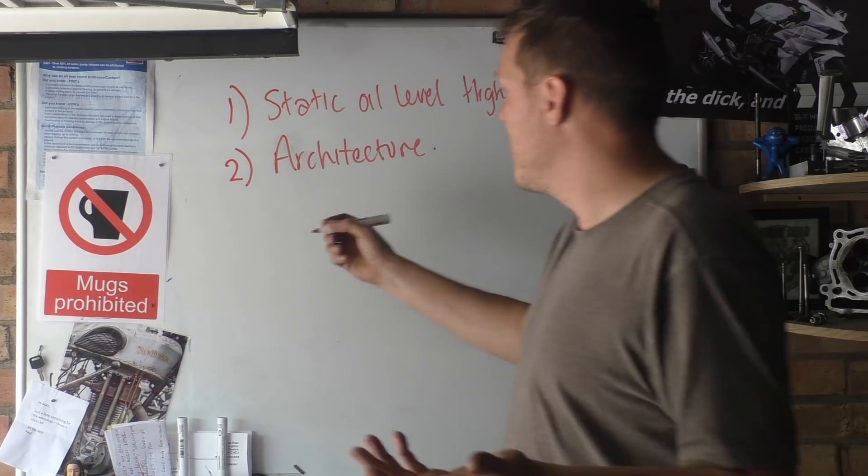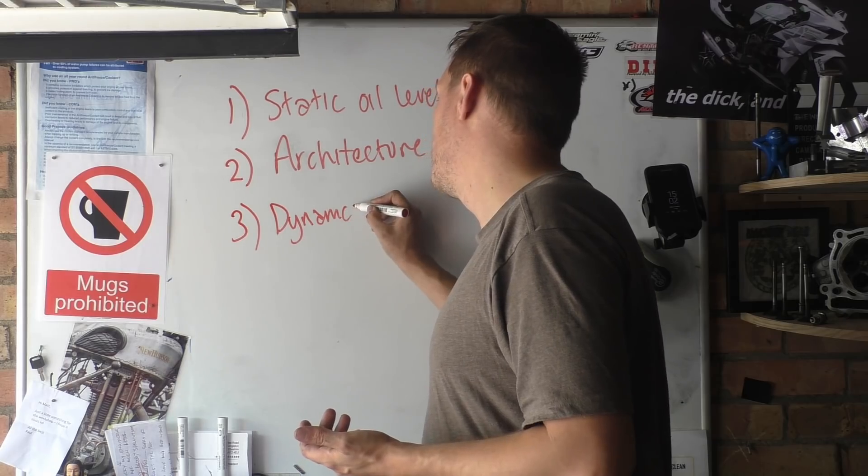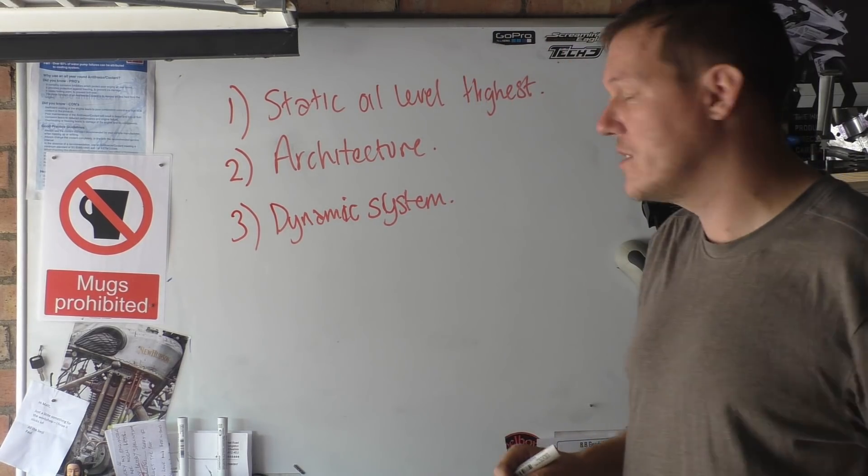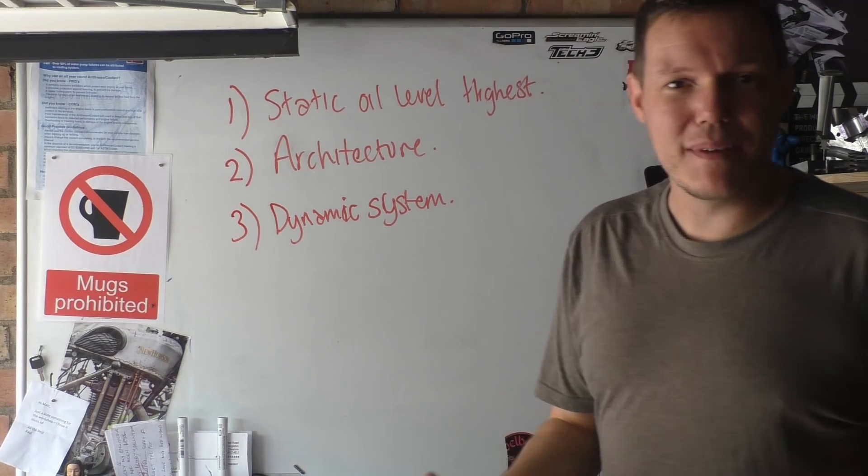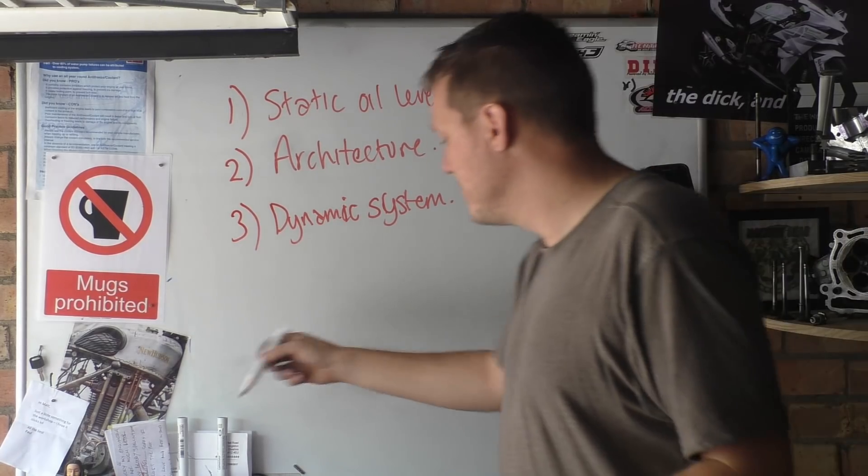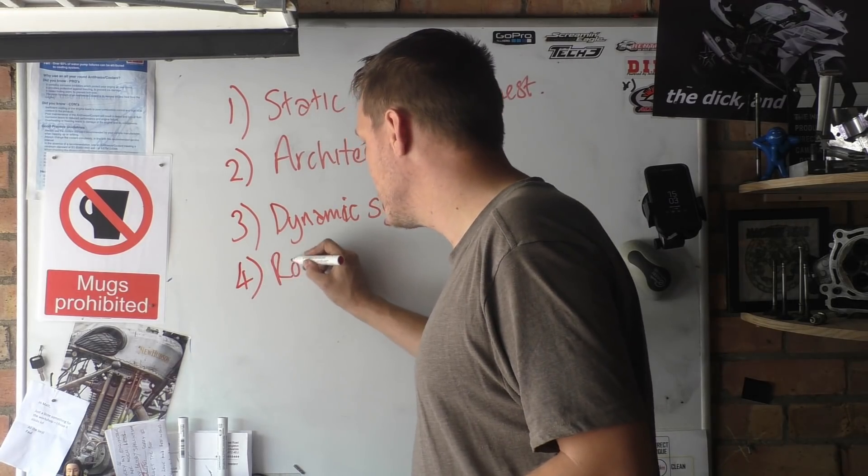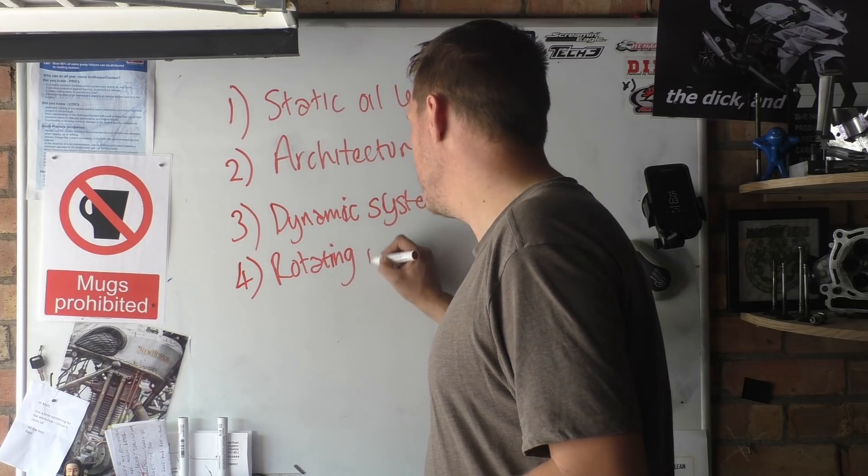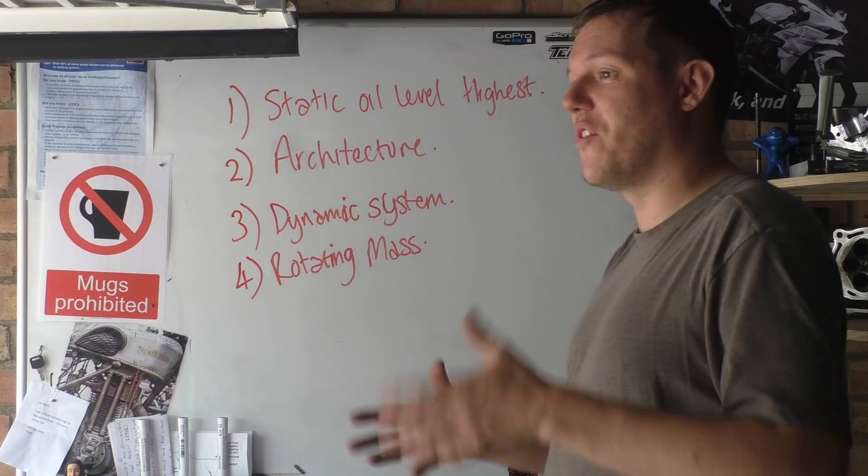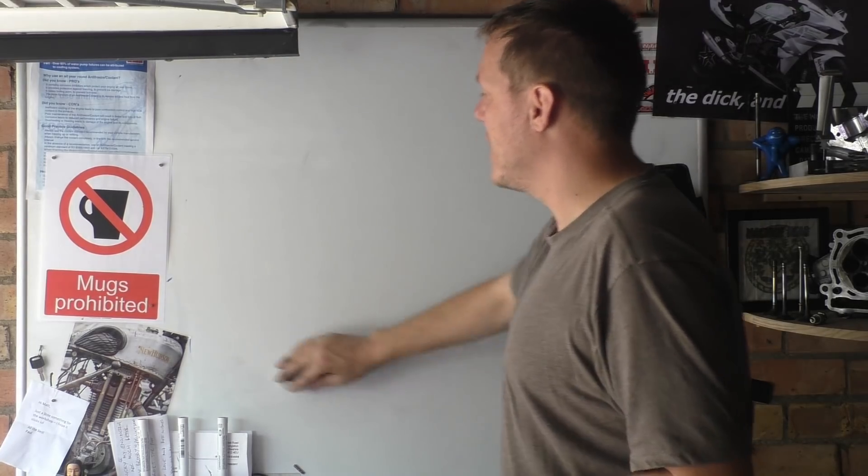The other thing we want to remember is that it's a dynamic system. Things are sloshing around, stuff's flying everywhere. It's an oil system. With that in mind, the fourth thing we need to remember is that we have a rotating mass. The forces involved here are extremely high, very very high.